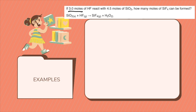If we have 3 moles of HF reacting with 4.5 moles of SiO2, how many moles of SiF4 can be formed? The first step is to determine if this is a limiting reactant problem by identifying the given amounts of the reactants and what product is being solved. Since the problem gives an amount for more than one reactant — 3 moles of HF and 4.5 moles of SiO2 — it is a limiting reactant problem. You will set up two separate stoichiometric calculations, one for each compound, to solve for the theoretical yield of SiF4.